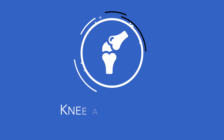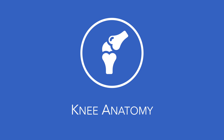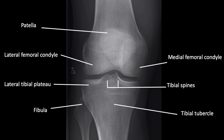When looking at anatomy on x-ray, it is important to remember that there is so much tissue overlap - it's just like looking at a whole book printed on one page. This is an AP radiograph of the knee showing the patella, lateral and medial femoral condyles, the tibial spines, lateral tibial plateau, medial tibial plateau, tibial tubercle, and the fibula.